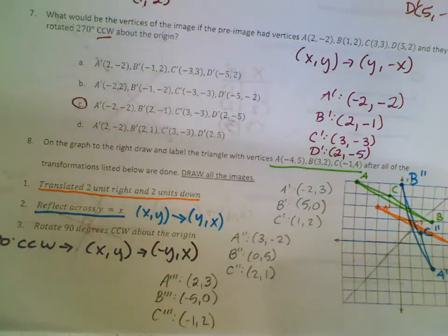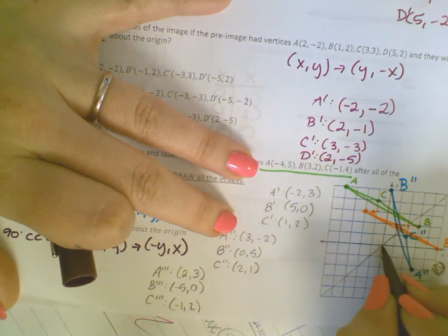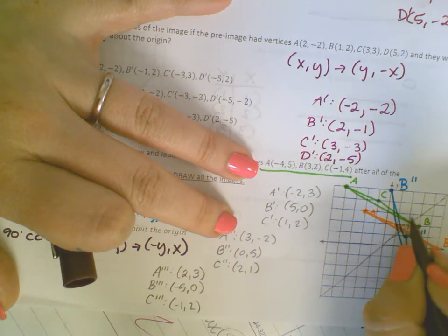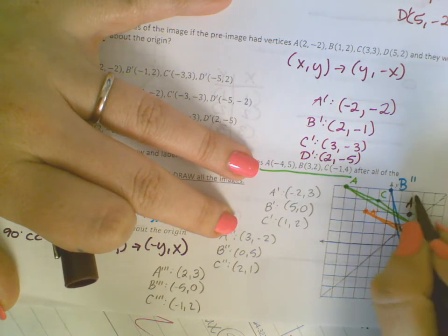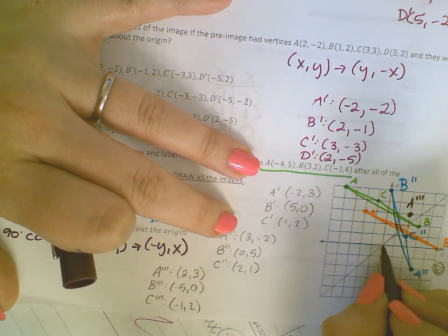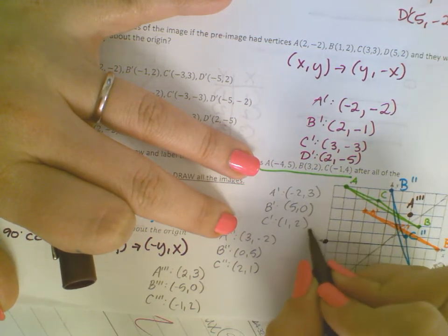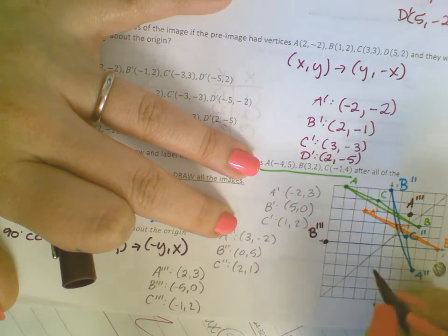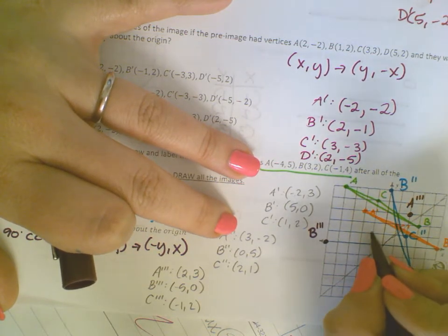So I'll go ahead and plot that with purple. So where A triple prime is at 2, 3. B triple prime is at negative 5, 0. And C triple prime is at negative 1, 2. And that should be your final image.